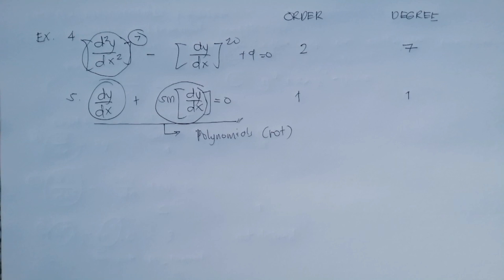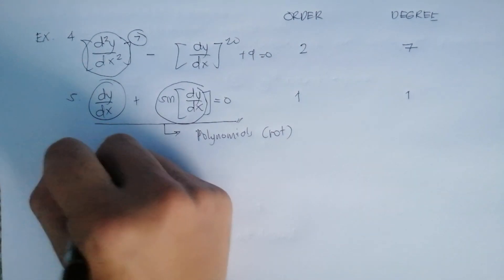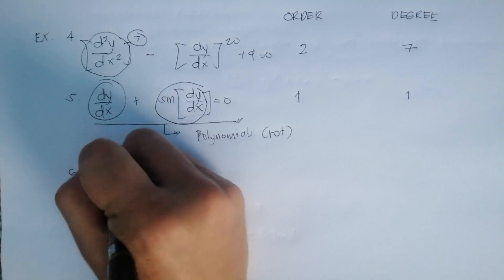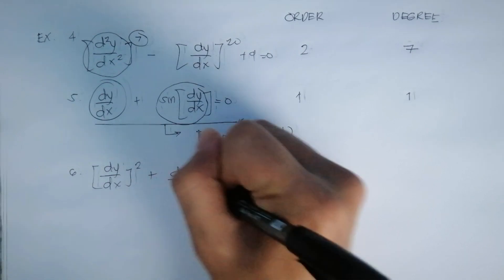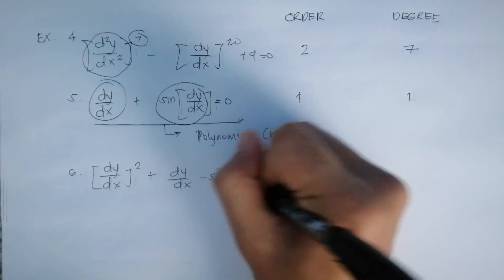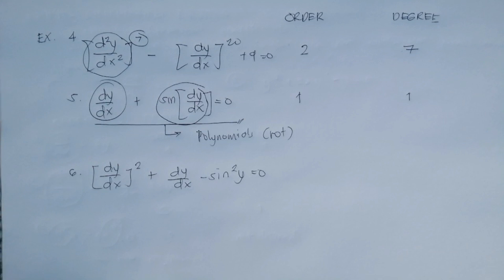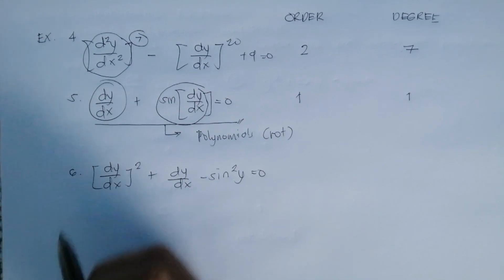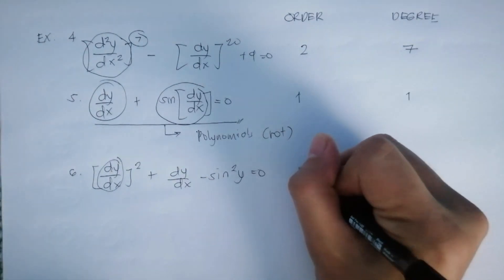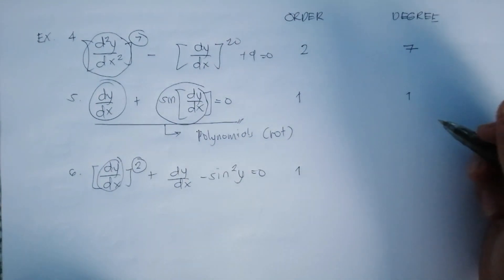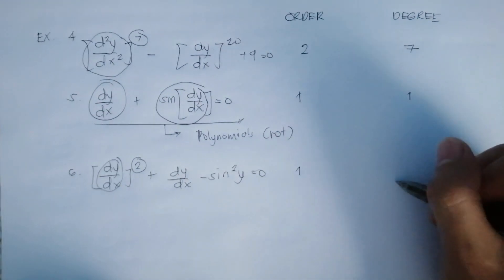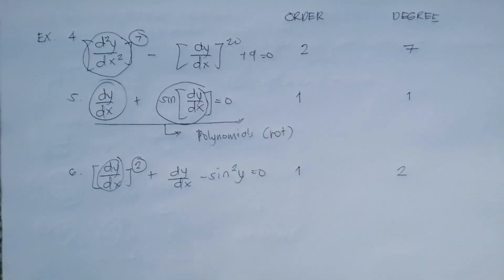For the last example, number six: (dy/dx)² + dy/dx - sin²(y) = 0. This is first order. The degree is 2 because the highest order derivative — dy/dx — is squared.